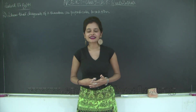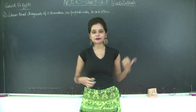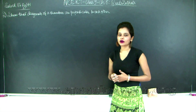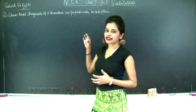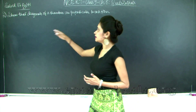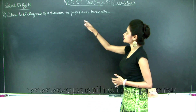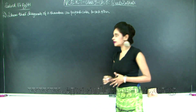Hello students, welcome back. Let us continue with the solved examples of chapter 8 on page 141. The second solved example: show that the diagonals of a rhombus are perpendicular to each other.